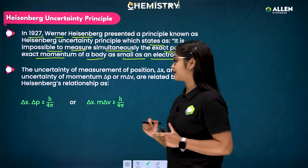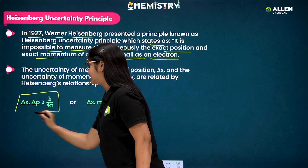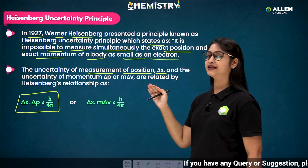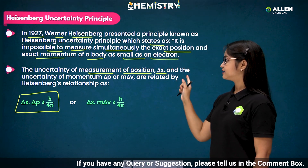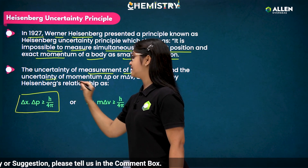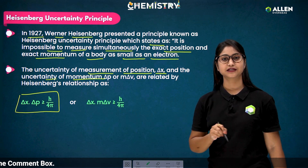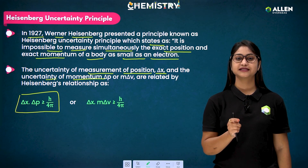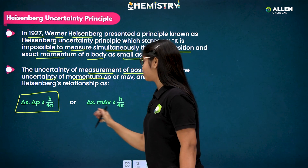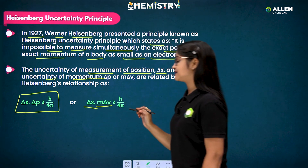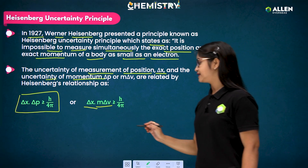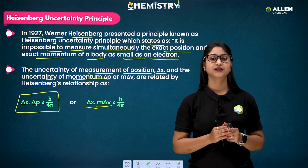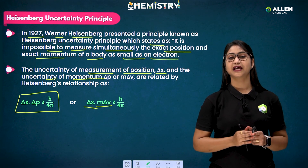The mathematical representation of this principle is: Δx · Δp ≥ h/4π, where Δx represents the uncertainty in the measurement of position and Δp represents the uncertainty in momentum. Since momentum p = m·v, Δp can be written as m·Δv, where Δv is the uncertainty in velocity. So the formula becomes Δx · m·Δv ≥ h/4π.